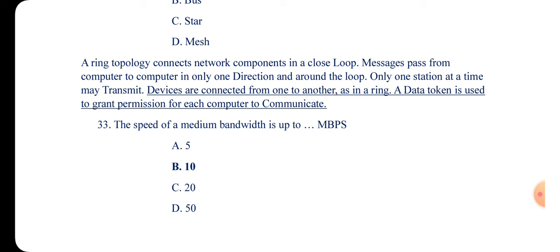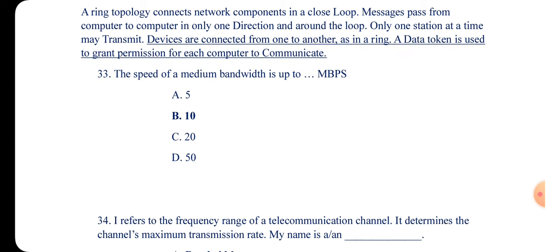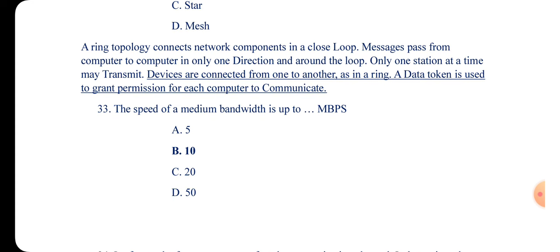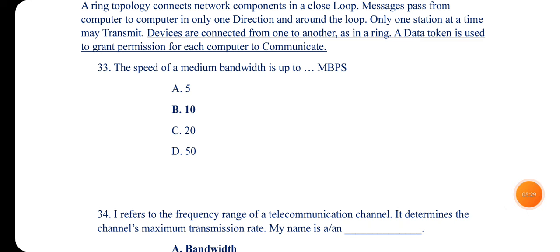Question 33: The speed of a medium bandwidth is up to what? The answer is B — that is 10.